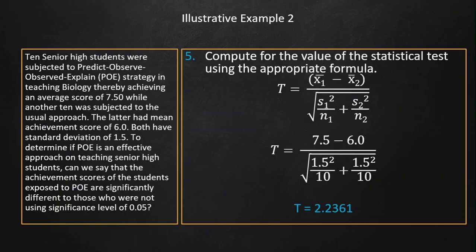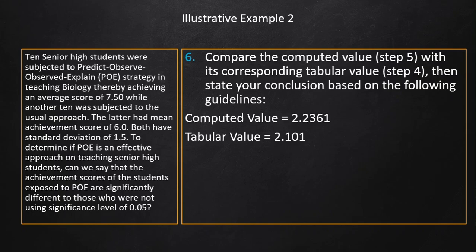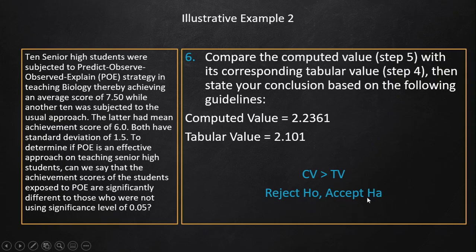Step 5: Compute the t-value. We have 7.5 minus 6 divided by the square root of 1.5 squared over 10 plus 1.5 squared over 10 (same standard deviation for both groups). The computed value is 2.2361. Step 6: Since the computed value 2.2361 is greater than the tabular value 2.101, we accept the alternative hypothesis.